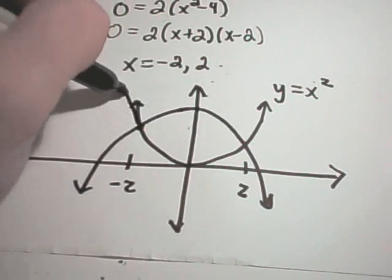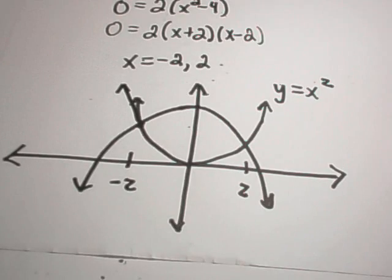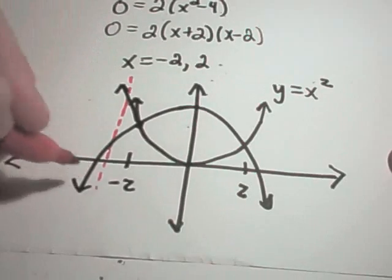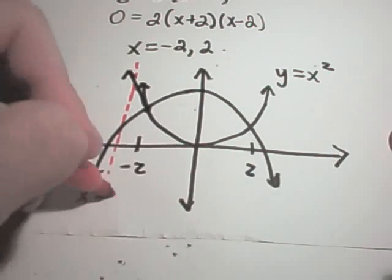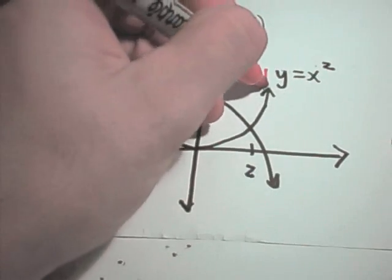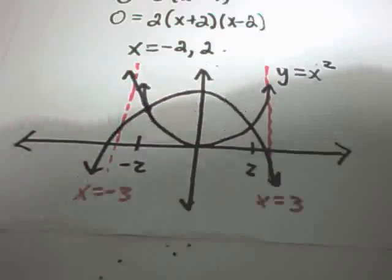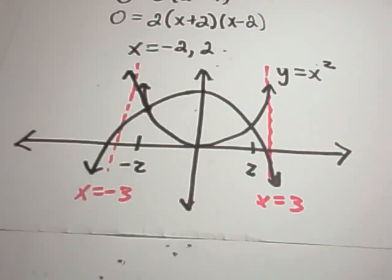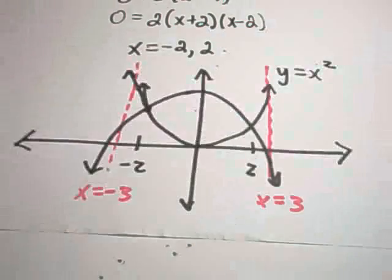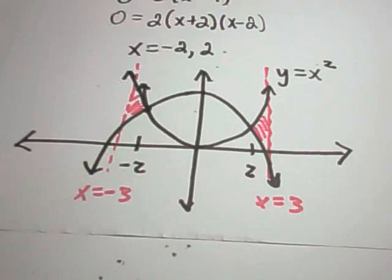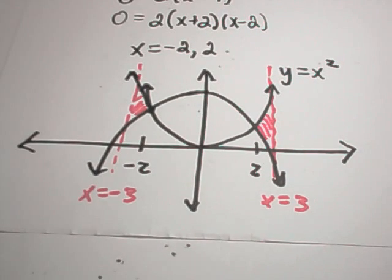But that's not the whole thing that we want to integrate. Because now we also have to trap it between x equals negative 3. So here's x equals negative 3 and also x equals positive 3. Okay, so we want to find the area trapped inside of all of these three regions. Between over here, the stuff on the right, and then also the stuff in the middle.